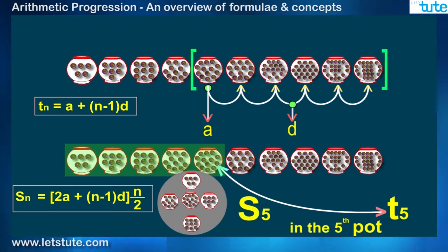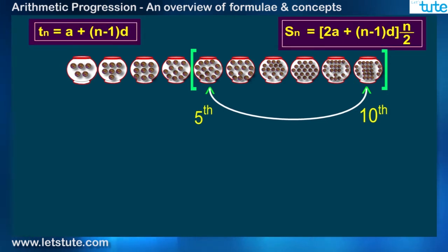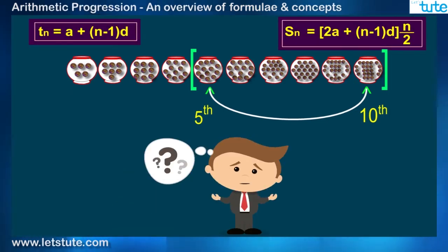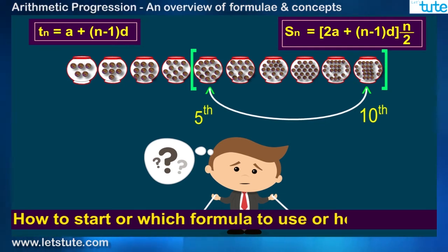If you have understood till now, then tell me the way you would find the total number of marbles from 5th to 10th pots both inclusive. Only two formulae but still confused. Is your confusion how to start or which formula to use or how to use? Probably, you have all three doubts, right?